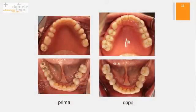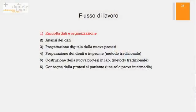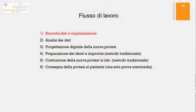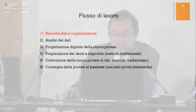Sopra c'è una protesi completa con un bottoncino sul canino e sotto c'è un ponte su tre impianti. Ci sono delle faccette sugli anteriori e degli overlay in ceramica su un incisivo del quadrante tre. Il flusso di lavoro è: raccolta di tutti i dati, analisi dei dati, design digitale delle nuove protesi, preparazione dei denti in bocca nel modo tradizionale, costruzione delle protesi in laboratorio e poi le protesi in bocca al paziente soltanto con un passaggio di prova.